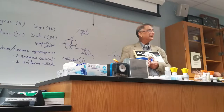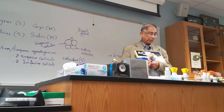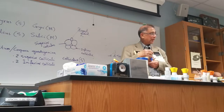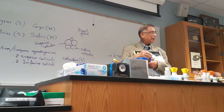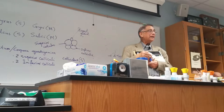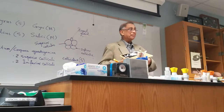The grayish appearance is given by the cell bodies of neurons, unmyelinated nerve fibers, neuroglial cells, etc. These give a grayish appearance, and that's why it's called gray matter.